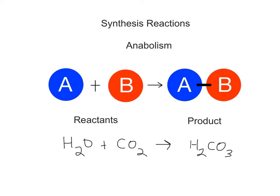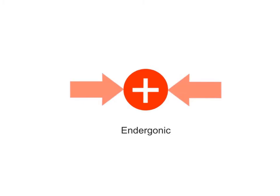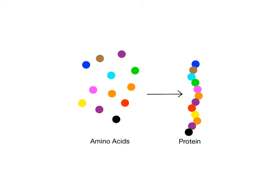All of the synthesis reactions taking place in the body make up the body's anabolism. The prefix ana means to raise up, and you've seen it used to describe anabolic steroids that build up protein-rich muscle tissue. Anabolic reactions are usually endergonic because they absorb more energy from the surrounding environment than they release. The reactions of protein synthesis, where smaller amino acid building blocks combine into larger proteins, are examples of your body's anabolism.